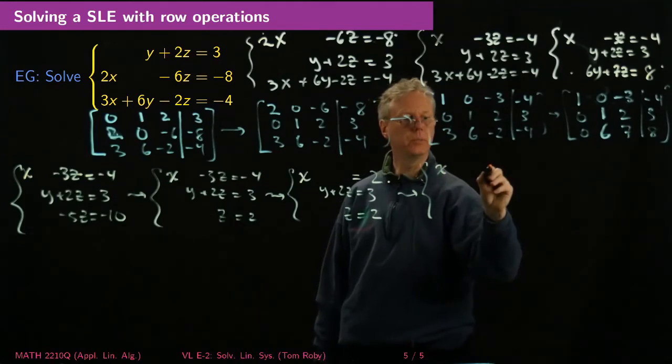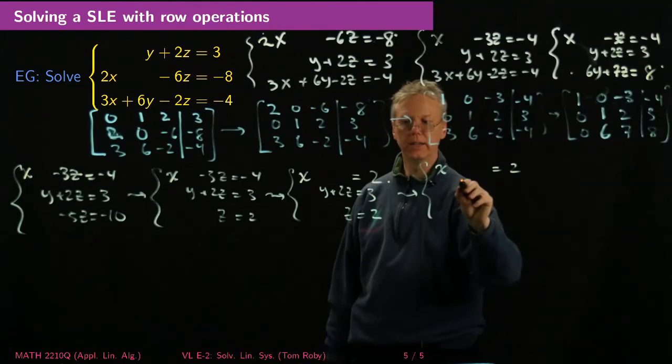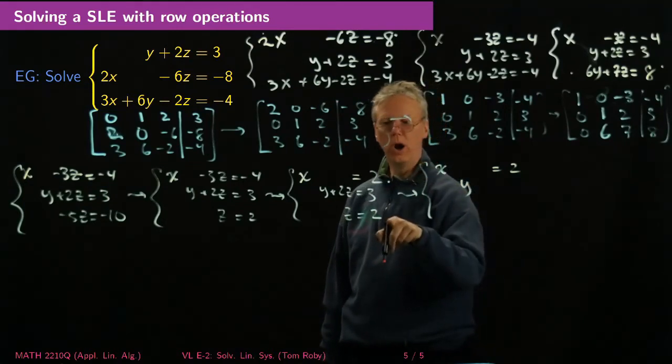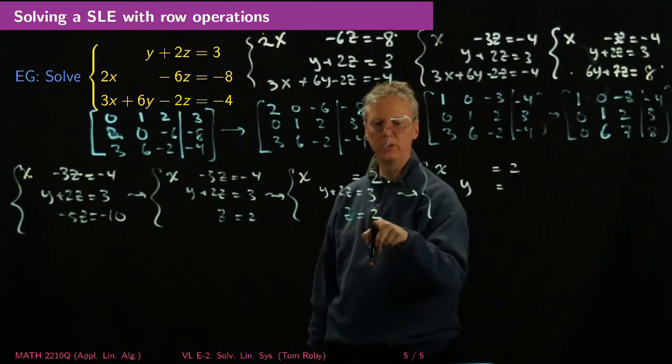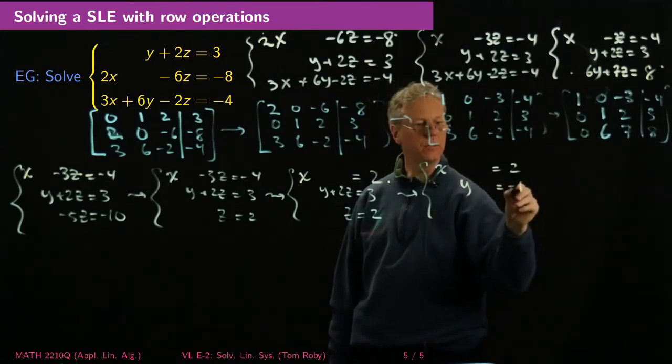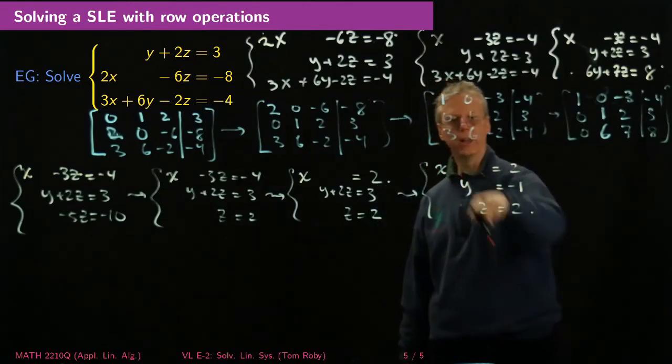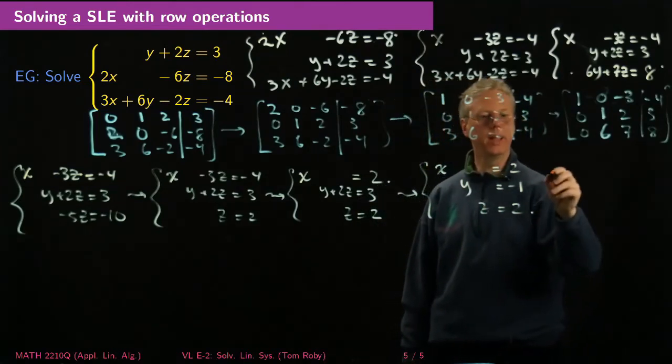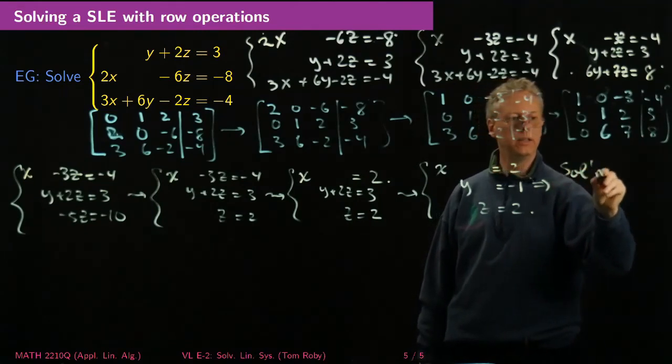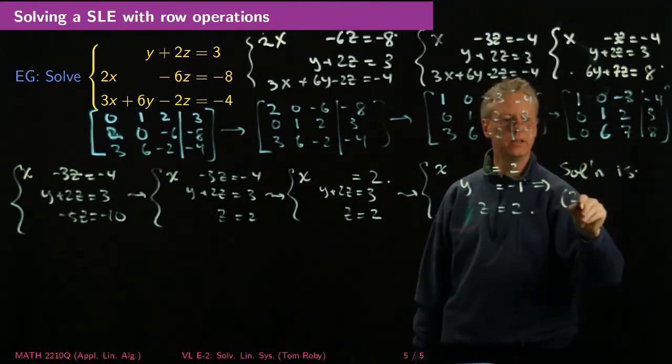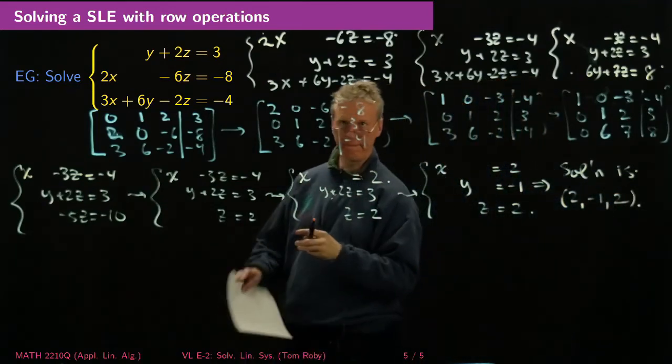So x equals 2, now I multiply by negative 2 and add to this I get y plus no z, multiply by negative 2 and add I get negative 1 and then z equals 2 and so now I've got my solution. Everything's lined up on a triangle like that and so that implies that my solution is 2, negative 1, 2.